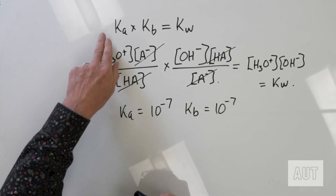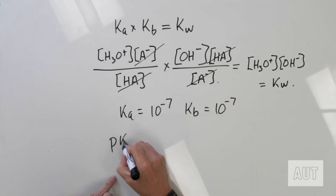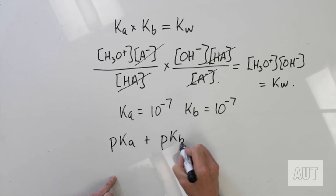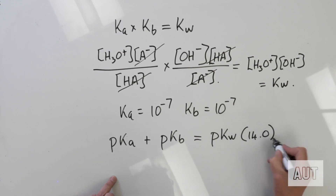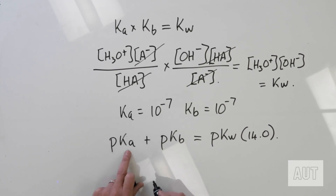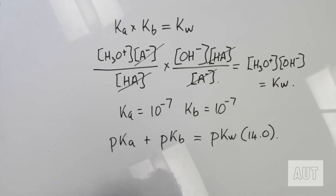We've now introduced weak acids and weak bases. Taking the negative log of both sides of Ka times Kb equals Kw gives us another important relationship: pKa plus pKb equals pKw, which at 25 degrees Celsius equals 14. So if we know the pKa, we can very easily get the pKb simply by subtracting from 14. Those are the important equations and manipulations for today — see you in the next one.